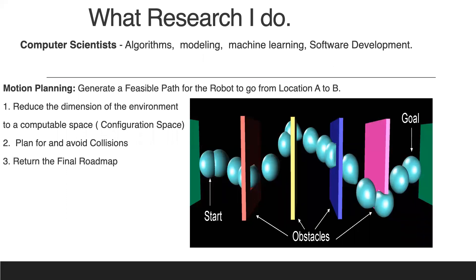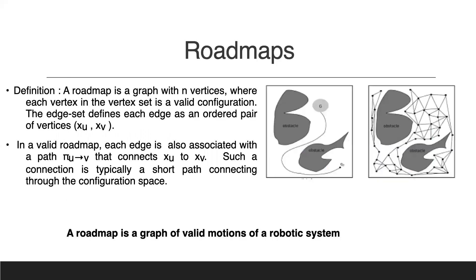I'm essentially a computational scientist — I lean more toward software development, modeling, and I've looked into machine learning as well. I'm a motion planner at heart. Most of my work is based on the notion of motion planning: how you generate a pathway going from location A to B. We look at the configuration space and plan to avoid collisions within that space, returning a final roadmap that represents the free space.